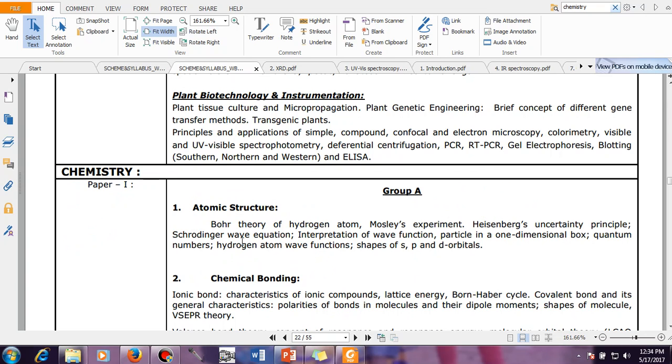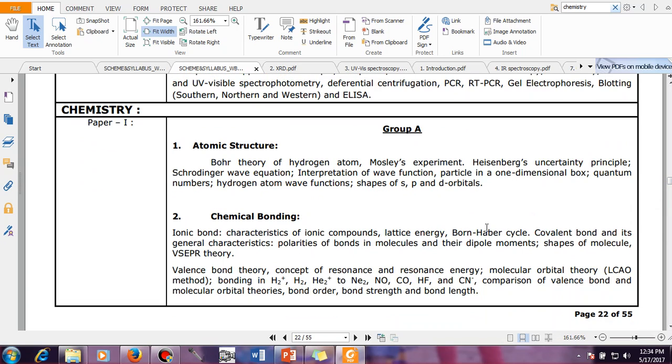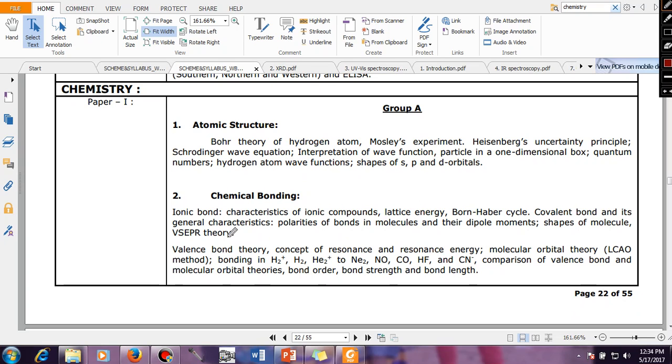In chemical bonding, what you have you can see: ionic bond, compounds, lattice energy, Born-Haber cycle, covalent bond and its general characteristics, VSEPR theory (valence shell electron pair repulsion theory), valence bond theory, concept of resonance, atomic orbital theory, molecular orbital theory...